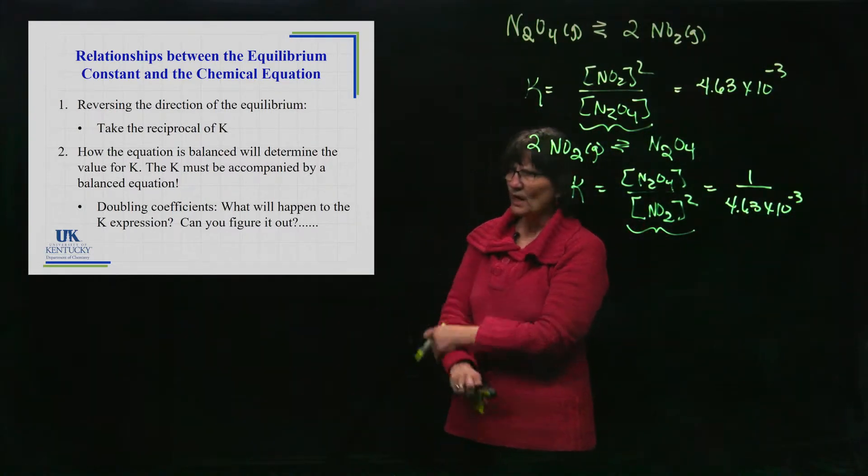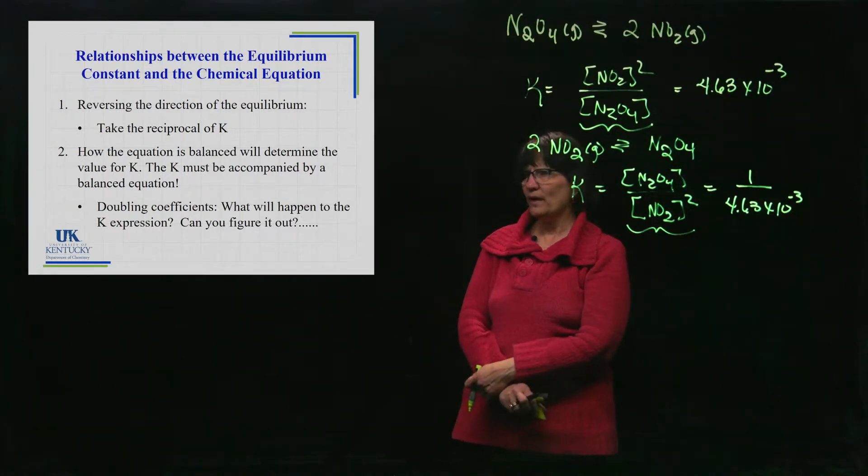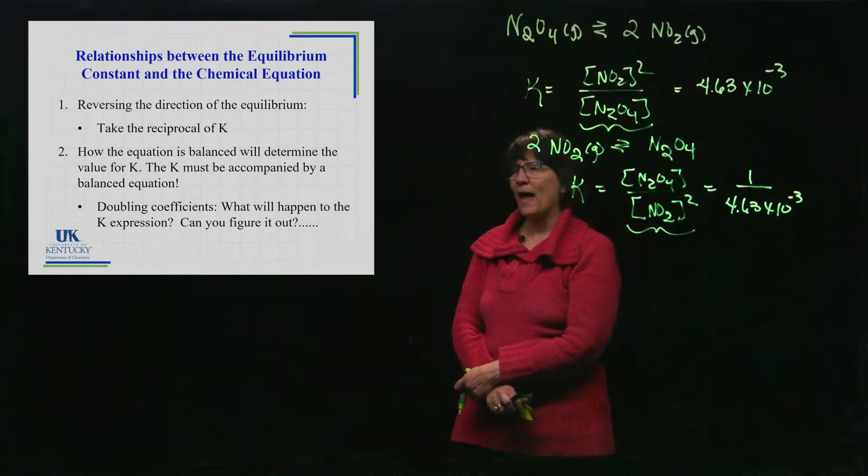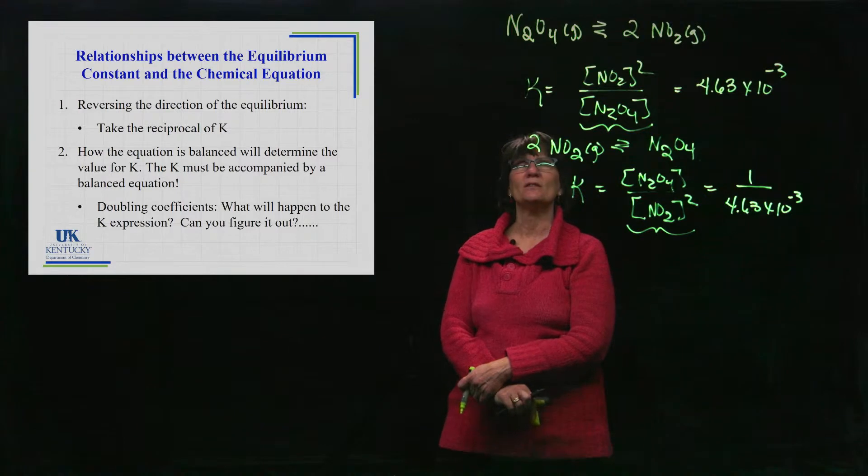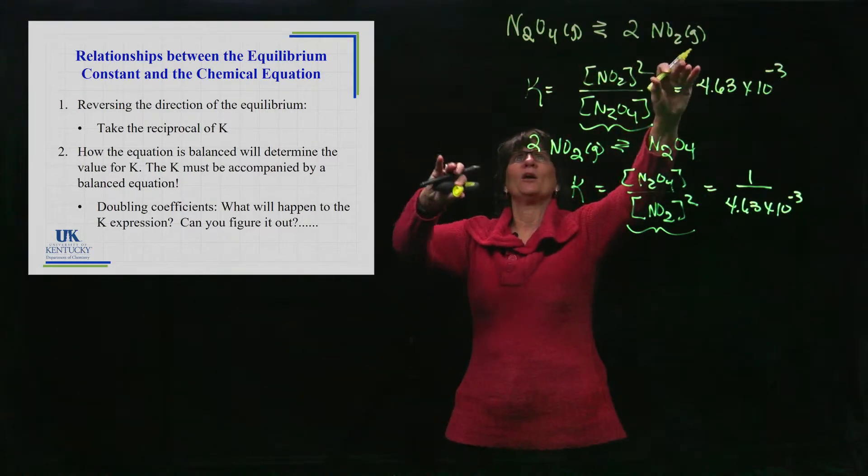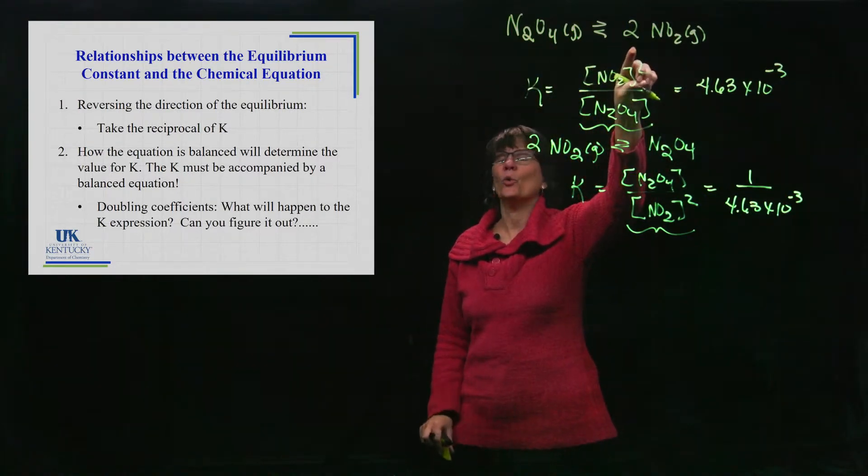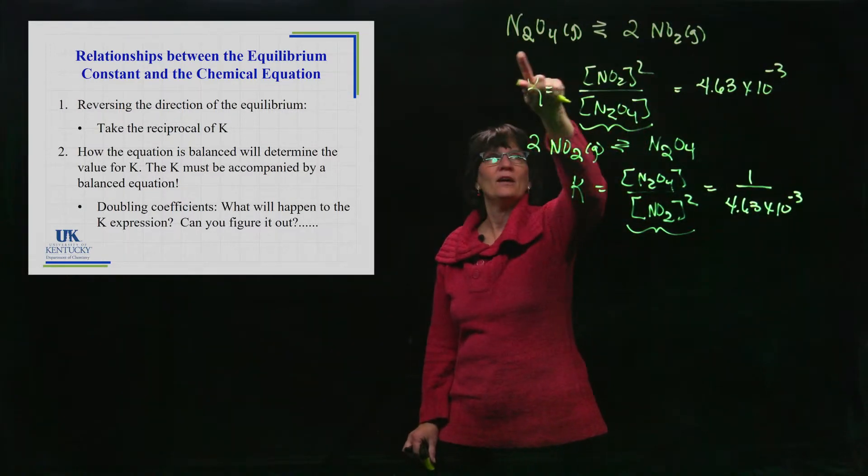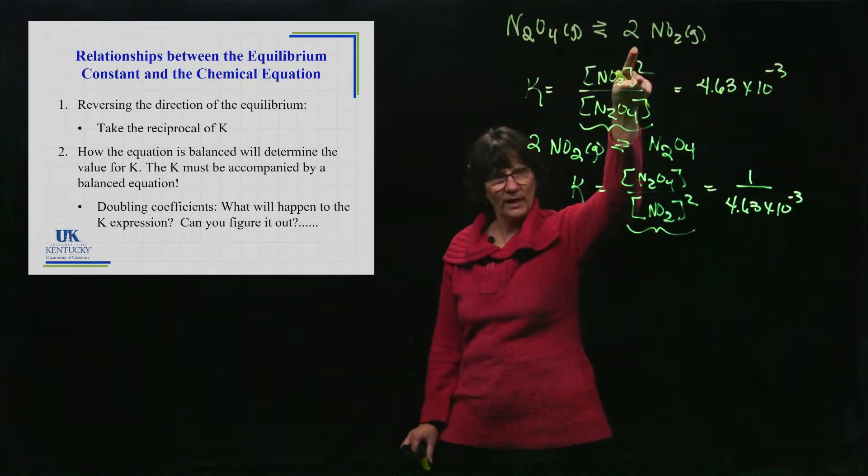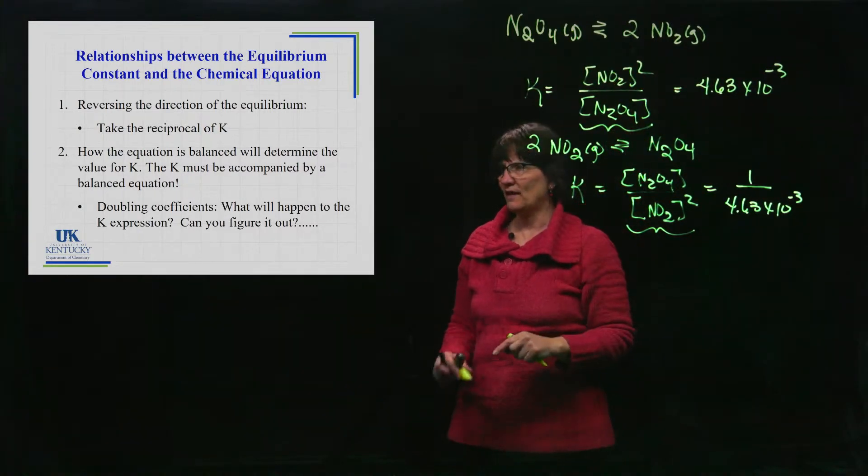Now number two says that if you go in and take an equation and you balance it differently, you change the coefficients. It's still balanced but you're changing the coefficients. This is one, this is two. Would it still be a balanced equation if this was one half and this were one? Well yes it would be, but it wouldn't still be the same K.